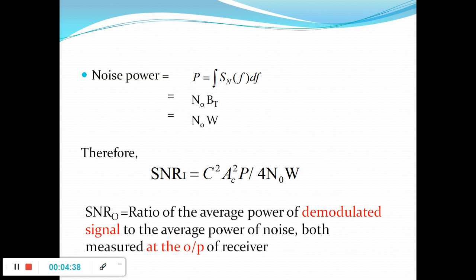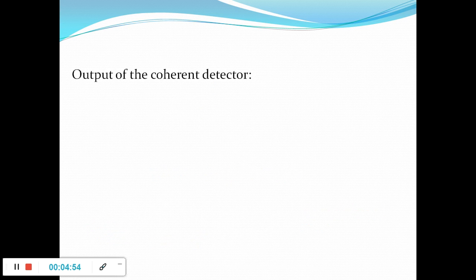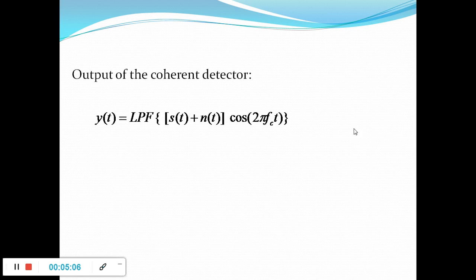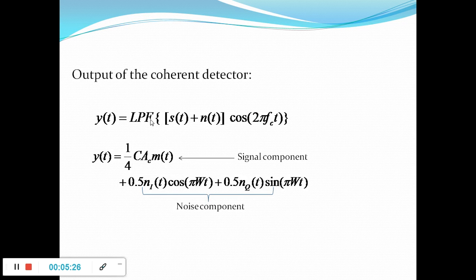Now let us look at the SNR at the output. It is the ratio of average power of the demodulated signal to the average power of the noise, both measured at the output of the receiver. The demodulation is a coherent detection, which consists of the product modulator — one input is the output of the bandpass filter (signal plus narrowband noise) and the other input is a synchronous carrier cos(2π·Fc·t). The output of the product modulator is given as input to the low pass filter, and substituting the expressions gives the result shown.